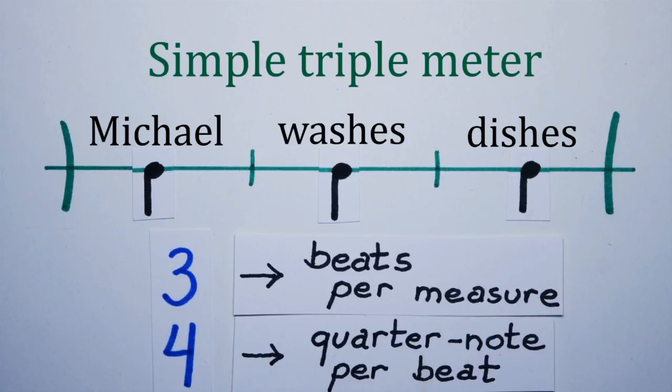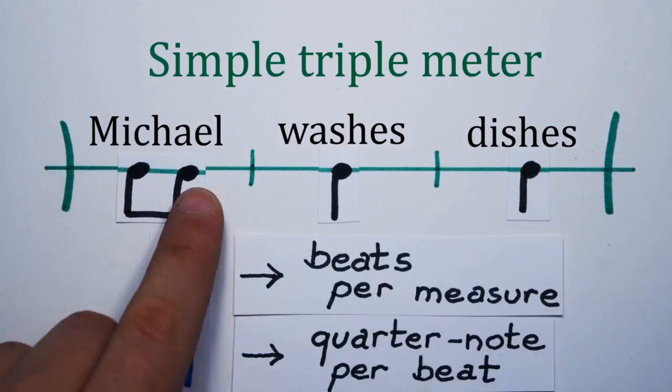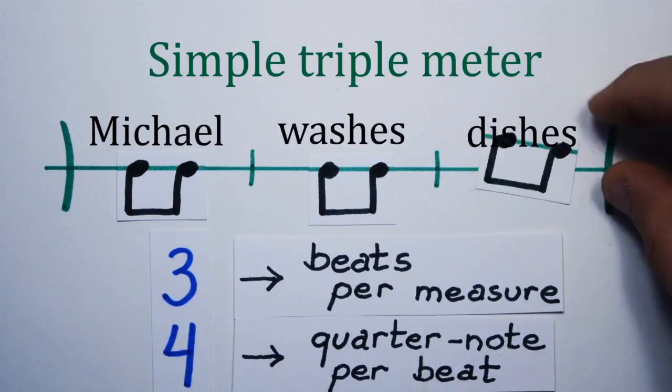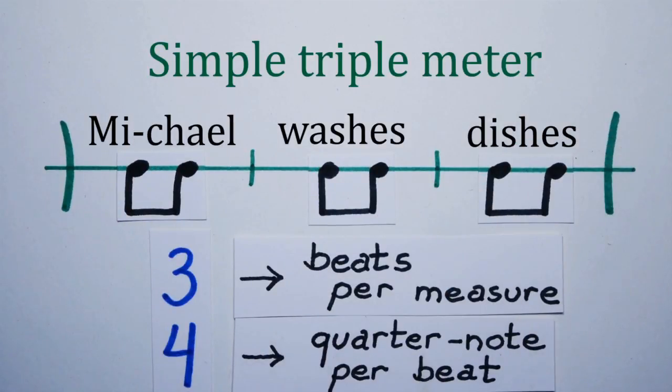If we need to display the pulses more clearly, we go from one beat per word to one pulse per syllable. Michael wash is dish is. And now let's cut things down to a two word sentence.